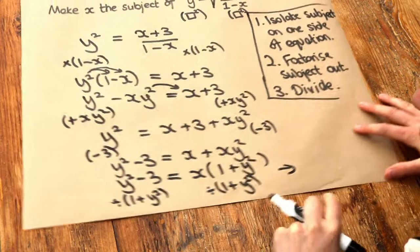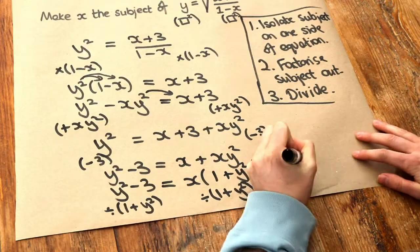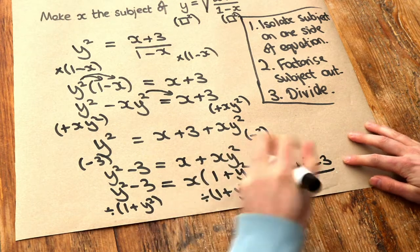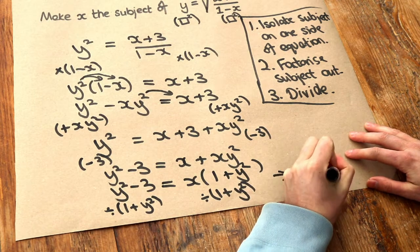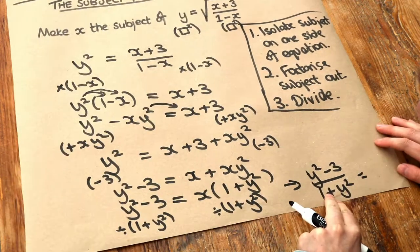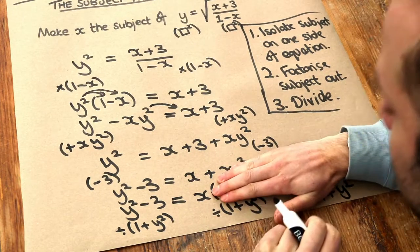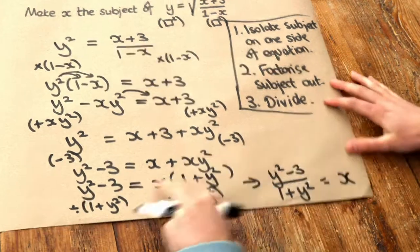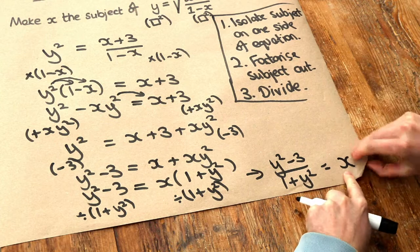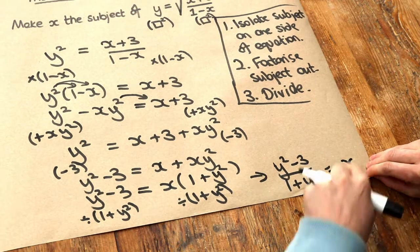Then that becomes y squared minus 3 over that 1 plus y squared we divided by. And then we divide the right-hand side by 1 plus y squared. It gets rid of that, just leaving x. And that's the final answer, because we've got x on one side of this equation and is exclusively on one side of the equation.